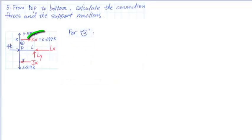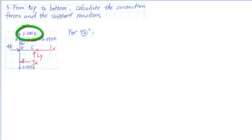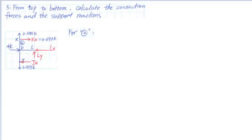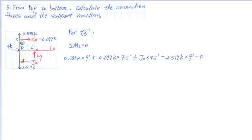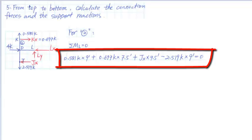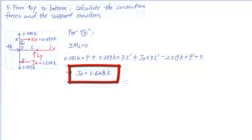For member 2, we have KX equals 0.697 kips, KY equals 0.581 kips uplift, and JY equals 2.519 kips. Three unknown connection forces remain: JX, LX, and LY. Summing moments at point L, assuming clockwise positive, we get 0.581 kips times 9 feet plus 0.697 kips times 9 feet plus JX times 7.5 feet minus 2.519 kips times 9 feet equals 0. Solving, JX equals 1.628 kips.